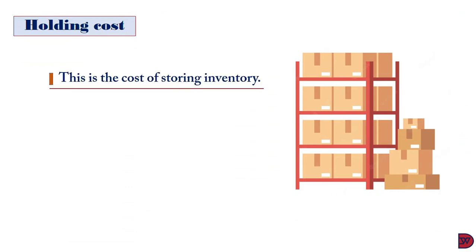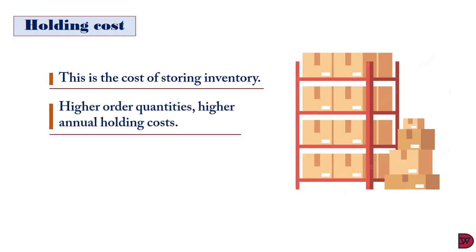The last cost is the inventory holding cost. This relates to a business storing its goods in inventory. It may include warehouse costs such as rent, utilities, and insurance. It can also include the interest or opportunity cost — money tied up in the inventory, meaning investment or deals that money could have been used for. The higher the quantity per order, the higher the holding cost, since more goods will need to be stored, and vice versa — the smaller the quantity ordered, the smaller the annual holding cost.